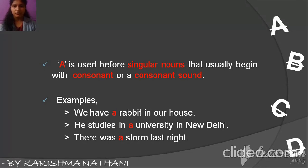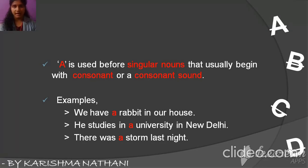He studies in a university in New Delhi. Here, university starts with U which is a vowel, but university has a consonant sound because we pronounce it as 'you' — Y is a consonant sound. So it takes A: a university.